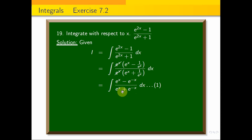Now you give a substitution. In the denominator, I will take e power x plus e power minus x as t. Then differentiate this, e power x minus e power minus x into dx is equal to dt.